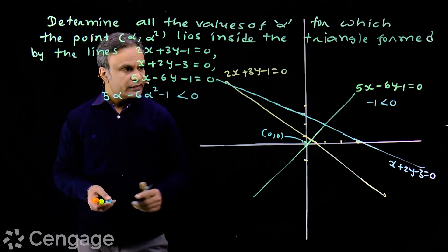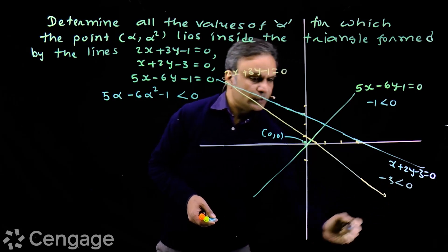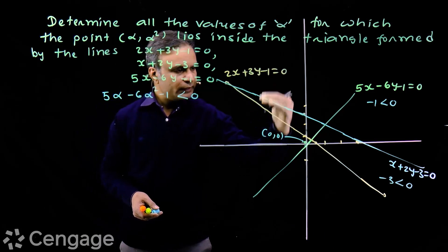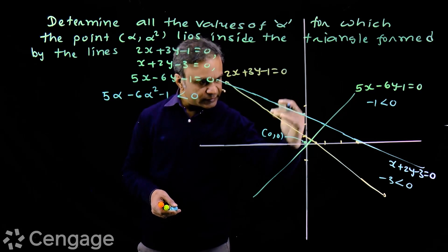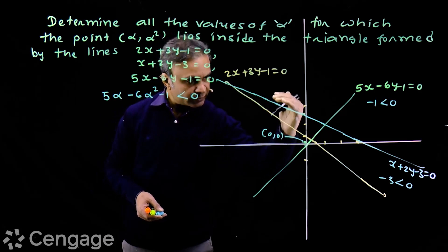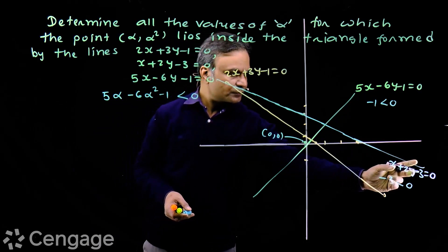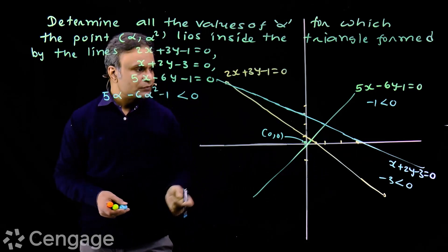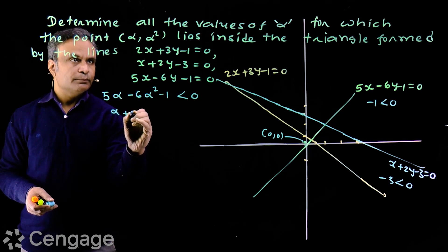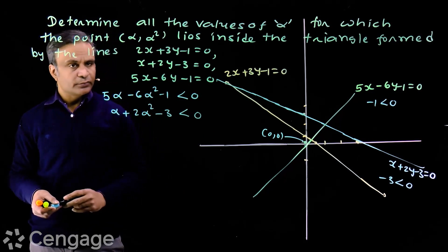Now considering the line x + 2y - 3 = 0 with respect to the origin: the sign of this expression is negative. The origin and this point lie on the same side of this straight line — the origin is below this line, and since the point is inside the triangle it will also be below. So the sign of this expression with respect to this point must also be negative, giving us the condition: α + 2α² - 3 < 0. This is condition number 2.